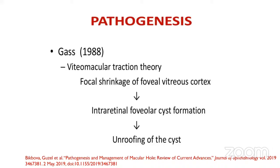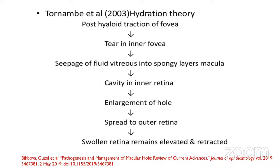Macular hole is one of the endpoints of VMT. There are two theories of pathogenesis: one proposed by Gass, involving vitreo-macular traction, focal shrinkage of the foveal vitreous cortex, intra-retinal foveolar cyst formation, and unroofing of the cyst. The second theory by Tornaybe et al. states there is posterior hyaloid traction at the fovea, a tear in the inner fovea, seepage of fluid causing a cavity in the inner retina, enlargement of the hole, spread to the outer retina, resulting in the final macular hole.